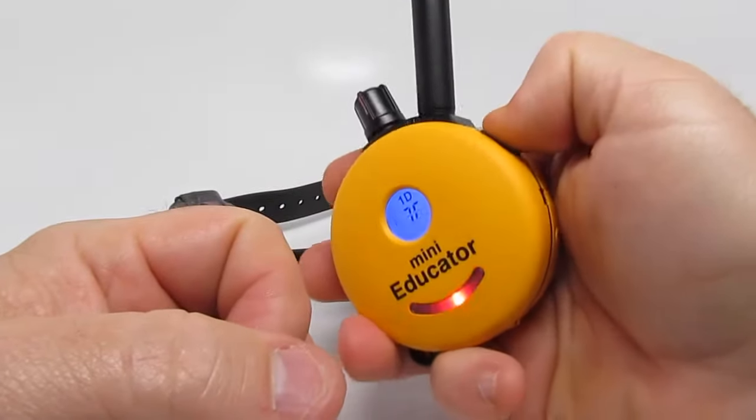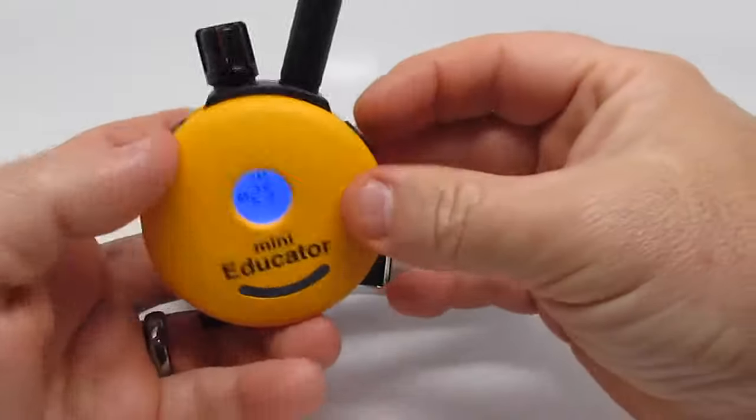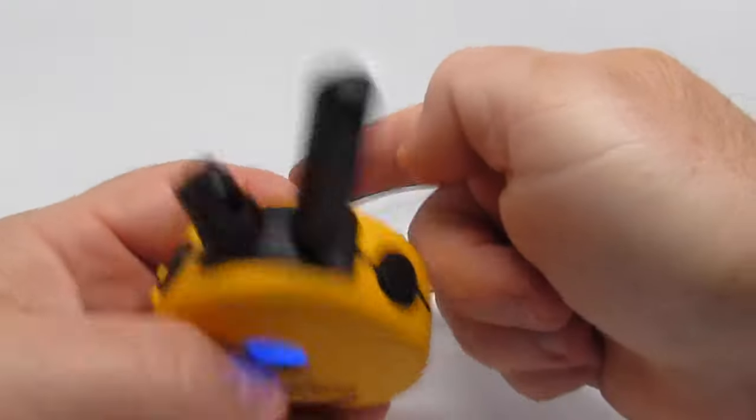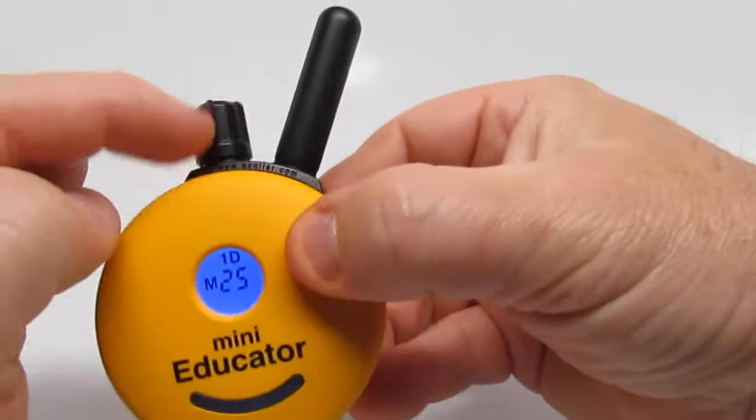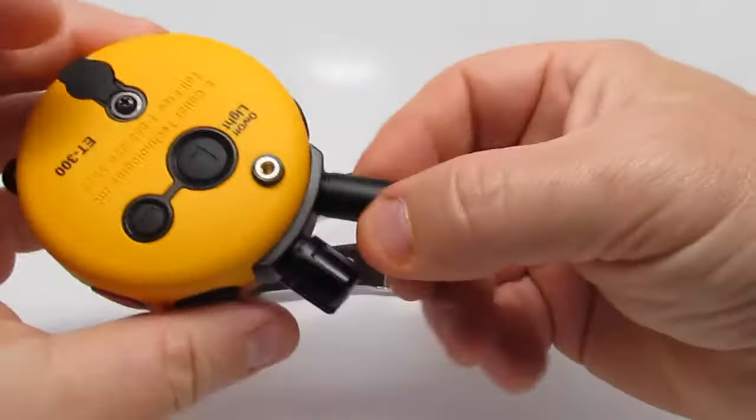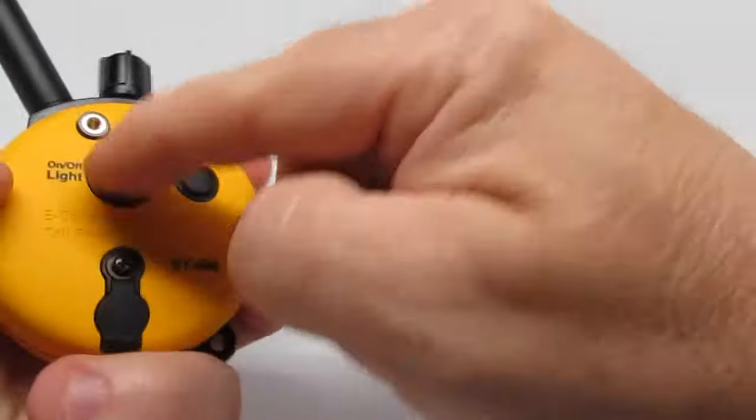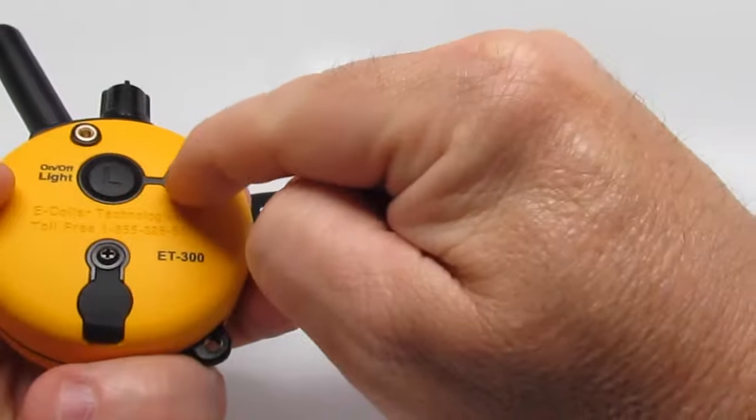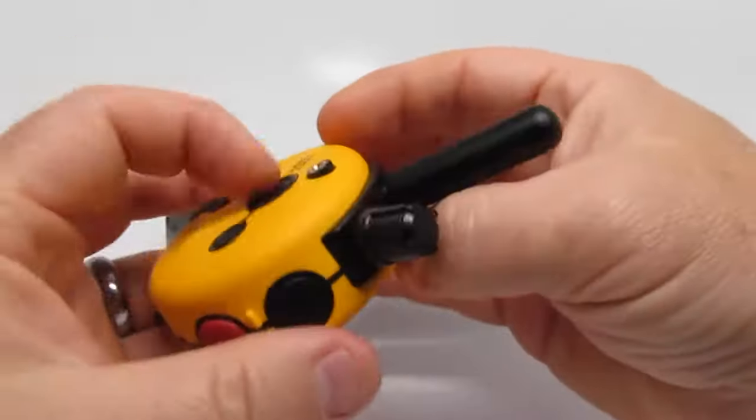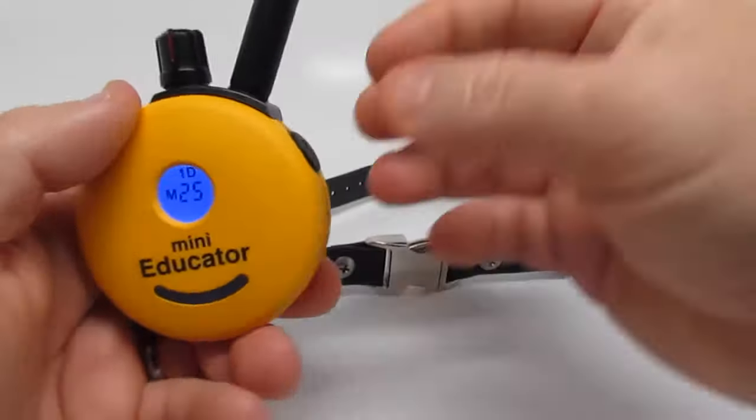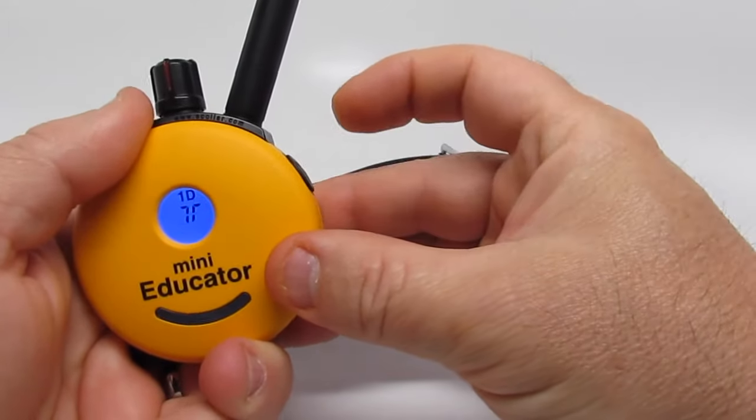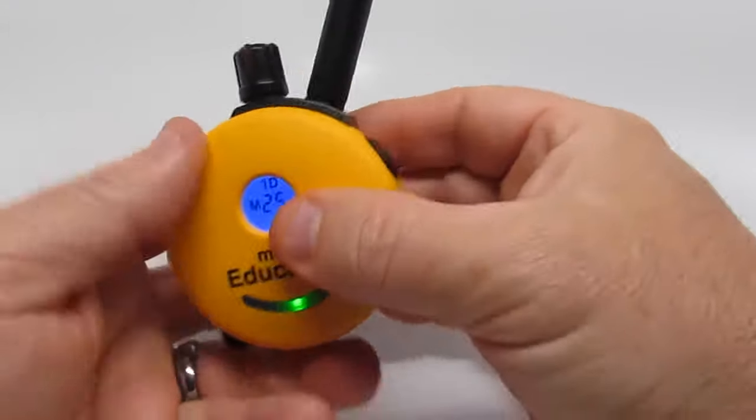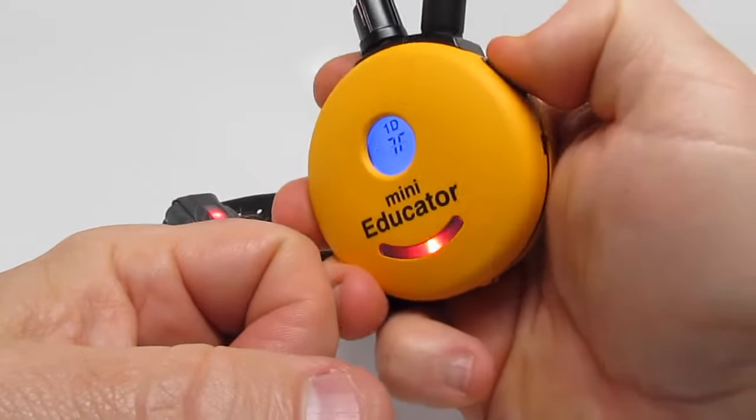We're on vibration now. If we want to go back to vibration, make sure we're on zero. Press and hold the L button on the back. It's actually the light button. Press and hold. Two beeps means we're back on vibration.